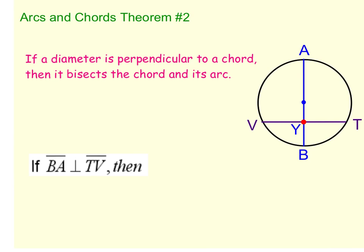For arcs and chords theorem number two, again, I'm going to need you to copy down a couple of things on your note sheet. First of all, draw this picture. We have a diameter going from A to B, right through the center of the circle, and then we have a chord.